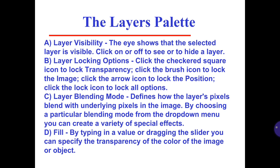Layer locking options: click the checkered square icon to lock transparency, click the brush icon to lock the image, click the arrow icon to lock the position, and click the lock icon to lock all options. Layer blending mode defines how the layer's pixels blend with underlying pixels in the image. By choosing a particular blending mode from the drop-down menu, you can create a variety of special effects. Fill: by typing in a value or dragging the slider, you can specify the transparency of the color of the image or object.